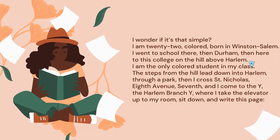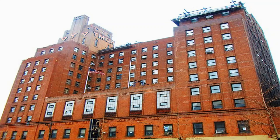Harlem is named here not accidentally. 'I am the only colored student in my class.' Even in Harlem, the steps from the hill lead down into Harlem. 'Then I cross St. Nicholas, 8th Avenue, 7th.' You see how he feels located by naming all these details of location. 'And I come to the Y, the Harlem Branch Y.' There is a park here, there is a branch — and maybe the blacks go to their branch. 'Where I take the elevator up to my room and sit down and write this page.'